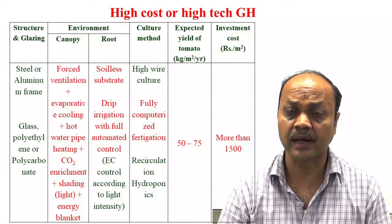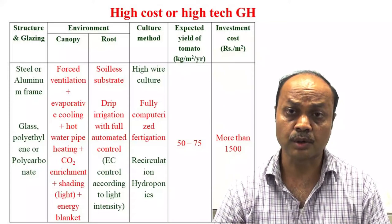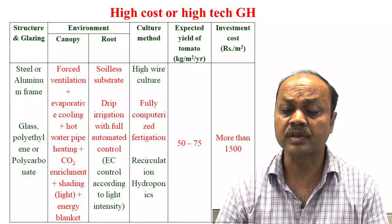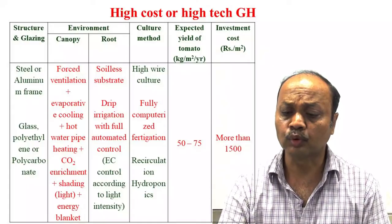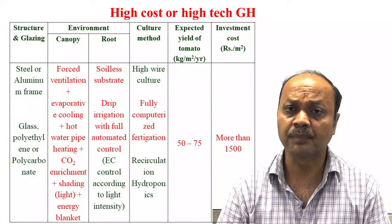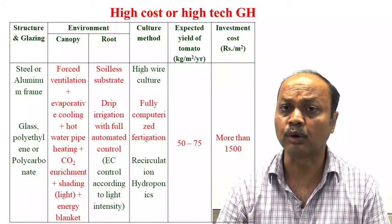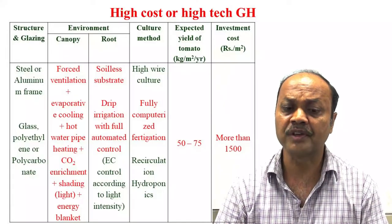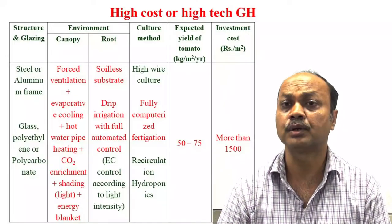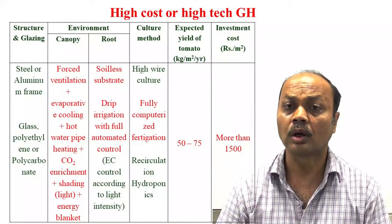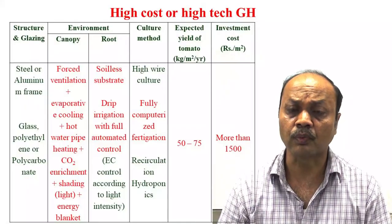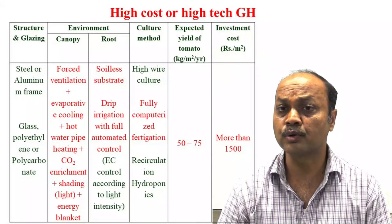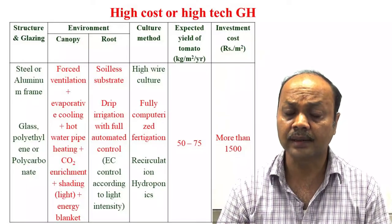In Australia, 1000 ton per hectare has been reported. The price of 1500 per square meter is very less; it will be very high depending on which type of automation and gadgets you are using to control your microclimate. Based on that, your cost will vary.